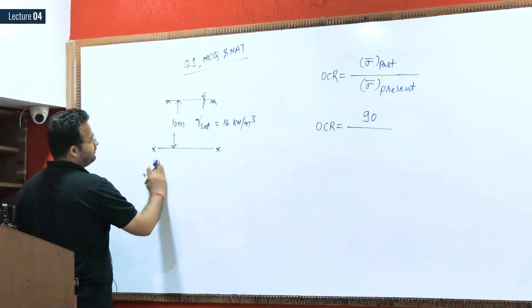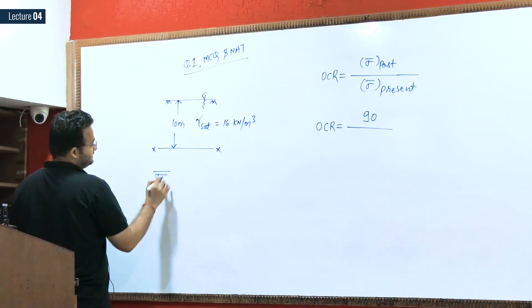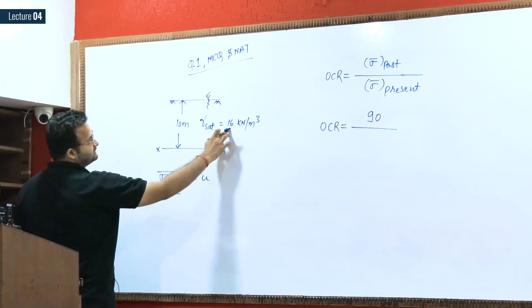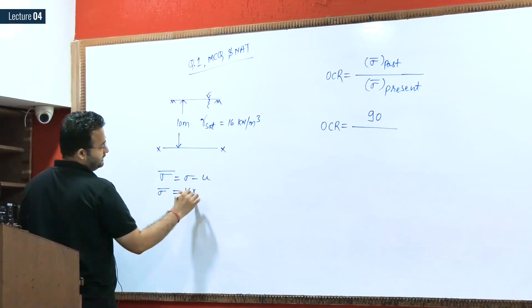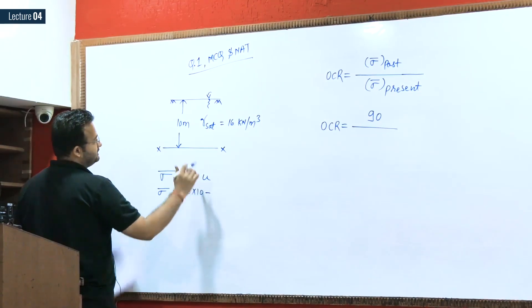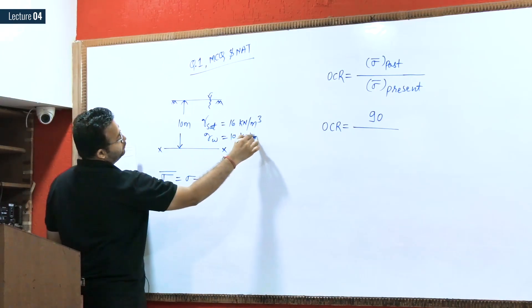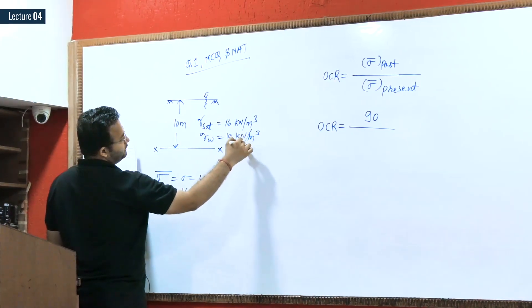Now what is the value of effective stress in the present condition? That we can determine. At this layer we have to determine the effective stress: sigma bar equals total stress minus water pressure. So total stress is 16 times 10.